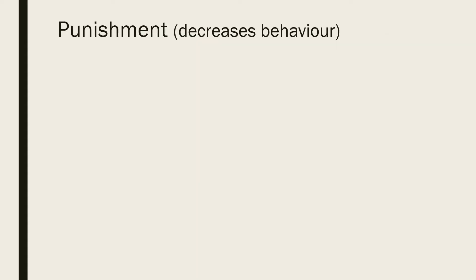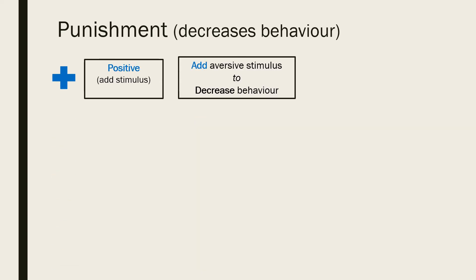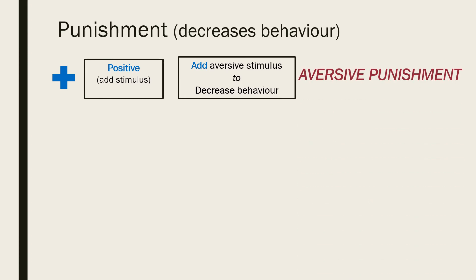The aim of punishment is to decrease an undesired behaviour, and this can be done in a couple of ways. One way to decrease this behaviour is by adding an aversive stimulus. This is sometimes called positive punishment as a stimulus is being added — just like in mathematics, positive means addition, not something good like the word positive often does in other contexts. Another name for this kind of punishment is aversive punishment, as the consequence being applied is something aversive and unpleasant.